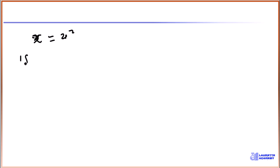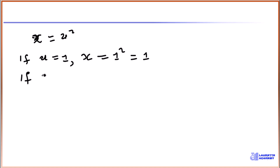If u equals 1, then x is equal to 1 squared, which is equal to 1. That's the first value of x. If u is equal to 2, then x is equal to 2 squared, which is equal to 4. So we have two values of x: 1 and 4.